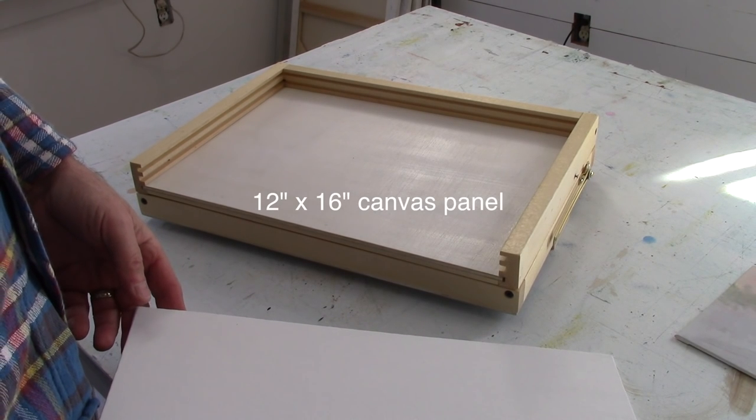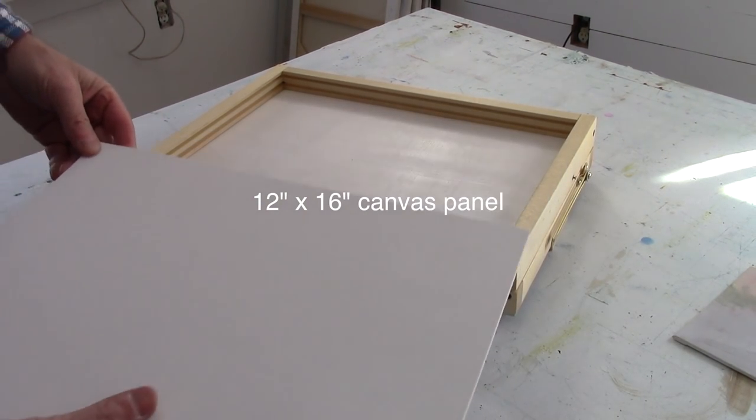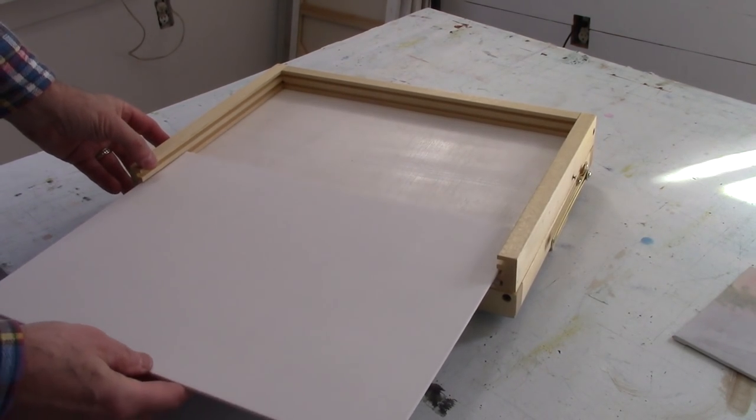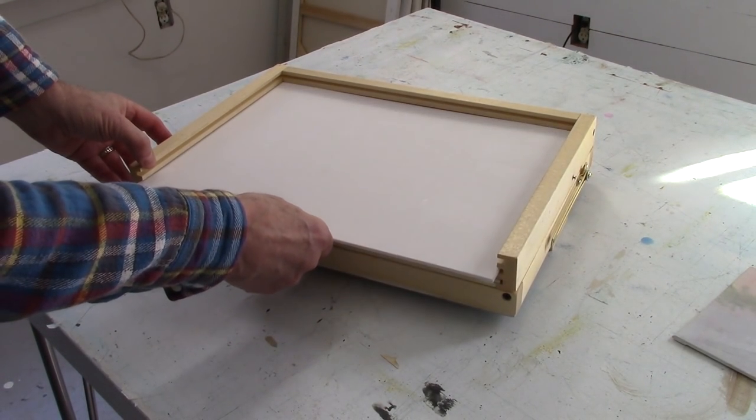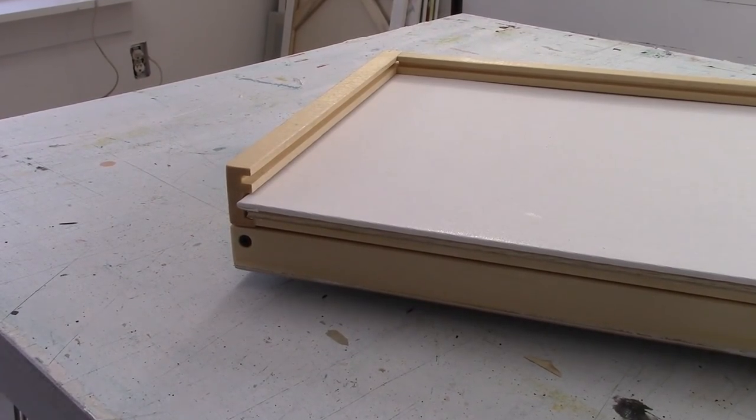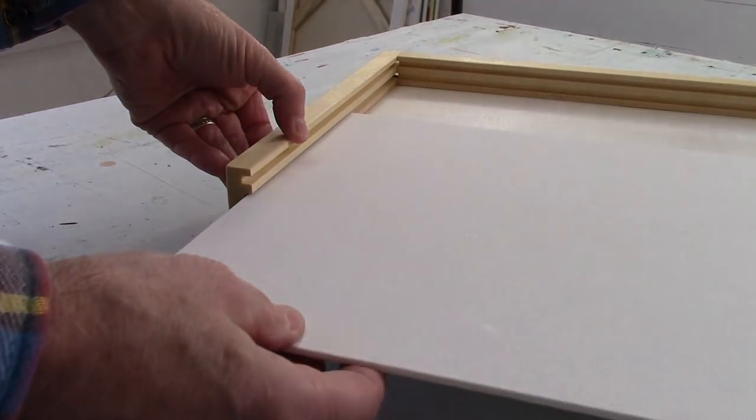My paint box is designed around a 12 inch by 16 inch canvas panel. Here you can see one panel being slid into the top lid storage slots. The top lid has two slots that will hold two panels.